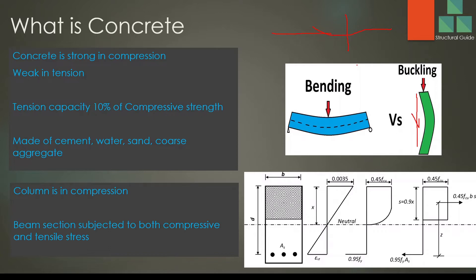That is when a column acts like a beam — we discuss this under beams. Columns in general are subject to compressive stress, so concrete can bear that stress. But in some occasions the compression capacity is not enough, and in such situations we provide reinforcement in the columns.